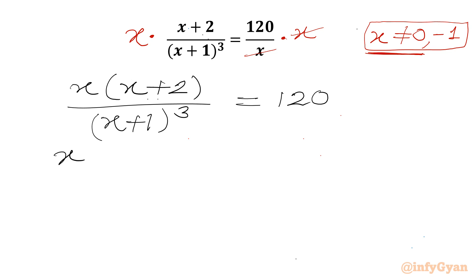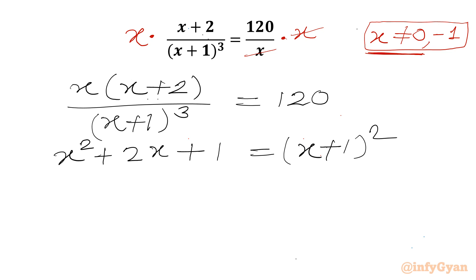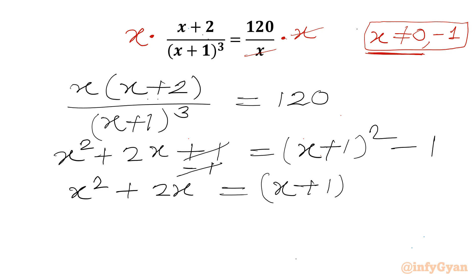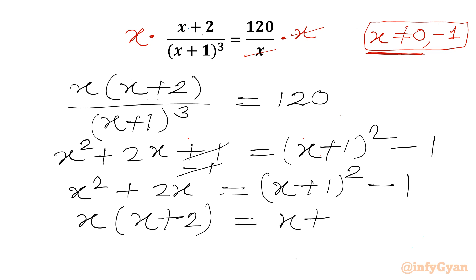Now I will use one algebraic formula: x² + 2x + 1 equals (x + 1)². If we subtract 1 from both sides, plus and minus 1 cancel, and we get x² + 2x equal to (x + 1)² − 1. Since x is common, we can write x(x + 2) equal to (x + 1)² − 1.